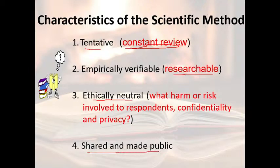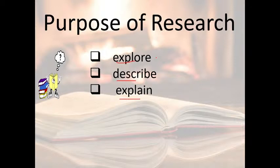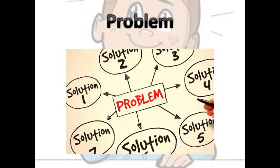The fourth characteristic is that research should be shared and made public. If you do your research and lock it in a box with no one knowing, it has no benefit. Only when you share your research with the public — write a paper and publish it in a scientific journal — does it have value. The purposes of research include: to explore something, to describe something, and to explain something. These are three very basic purposes — you are testing, explaining, exploring, or describing. These elements should be present in your research.